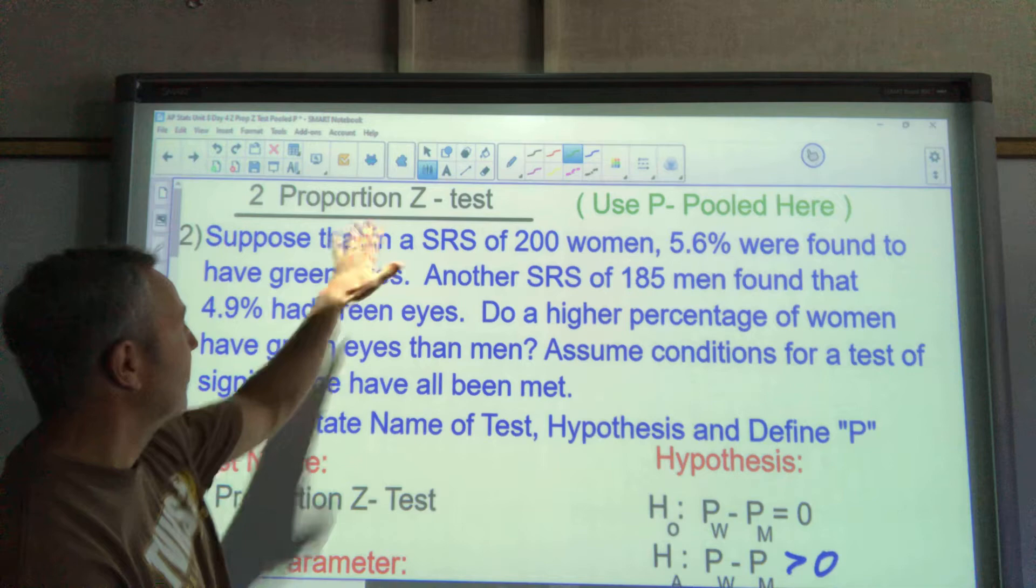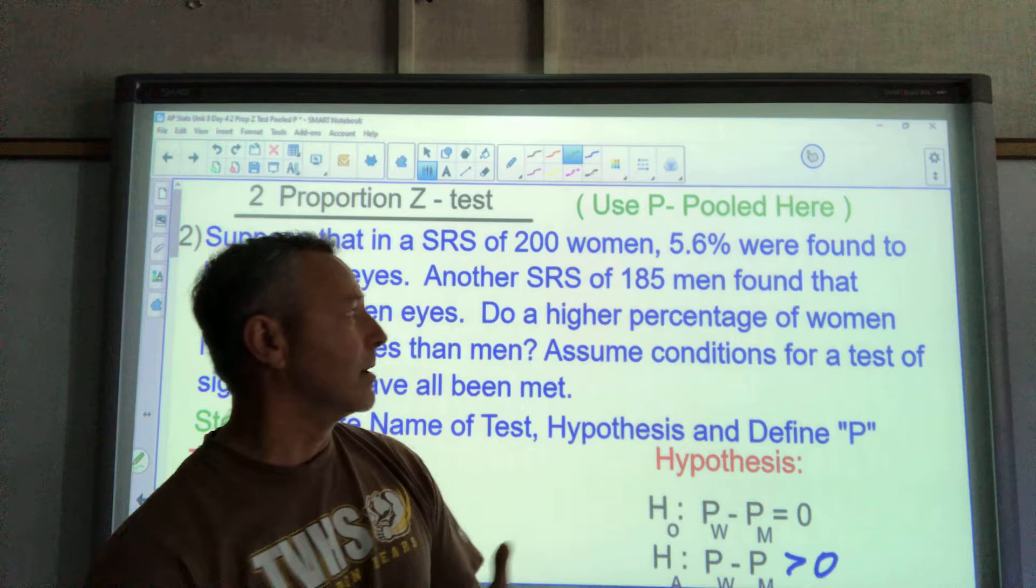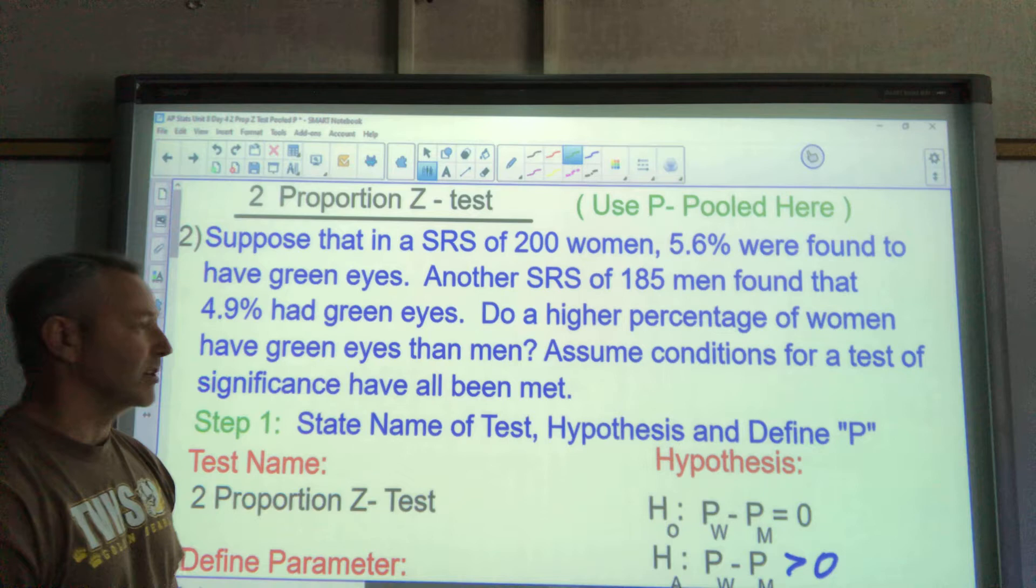Hey everybody, welcome to AP Stats. We're doing a two-proportion Z test today. This is the one that's hardest or has this little extra piece. It's the only time we use P pooled, our pooled proportion. I'll talk about that when we get there. We only pool our data on a two-proportion Z test, not interval, just this one situation. So it's harder to remember that.